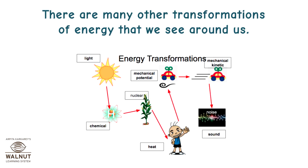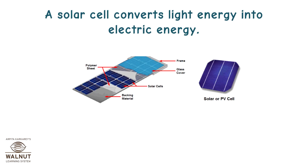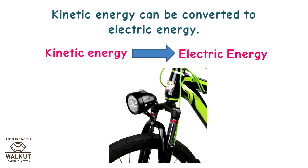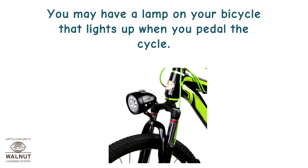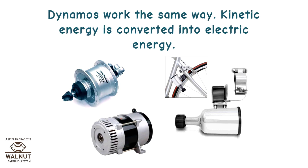There are many other transformations of energy around us. A solar cooker or solar water heater converts light energy into heat energy. A solar cell converts light energy into electric energy — solar cells are used on satellites in space to get constant power. Kinetic energy can also be converted to electric energy. A lamp on a bicycle lights up when you pedal; the pedaling creates kinetic energy, and part of it is transformed into electric energy to make the bulb light up. Dynamos work the same way.